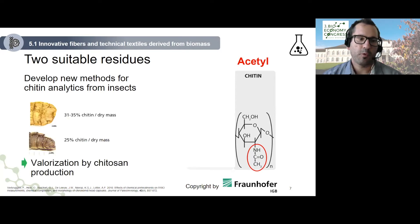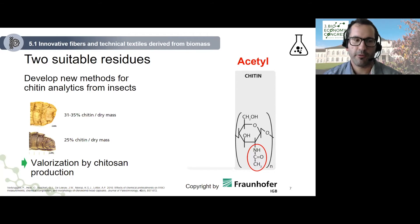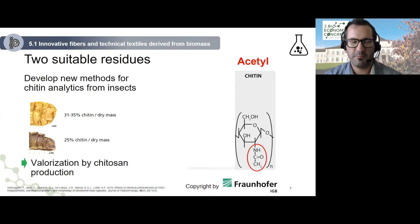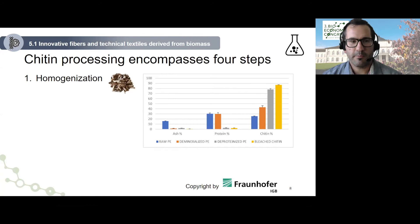What we determined is that larval exoskeletons contain a chitin amount of more than 30%, which is comparable to the pupal exuvial chitin content, accounting for approximately 25% chitin of the dry mass. This means both side streams are valuable for chitin and chitosan production. So we determined the suitable sources for chitin isolation.